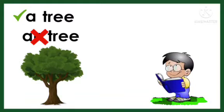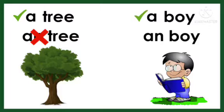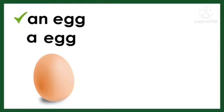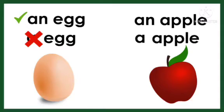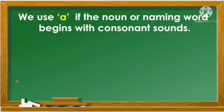Is it 'an tree'? What do you think is correct? That's right. A boy or an boy — what do you think is correct? That's right, very good. An egg or a egg? That's right, an egg. Next example: is it an apple or a apple? That's right, an apple.